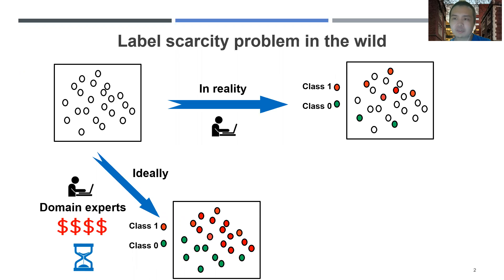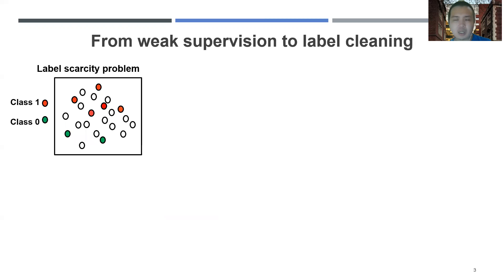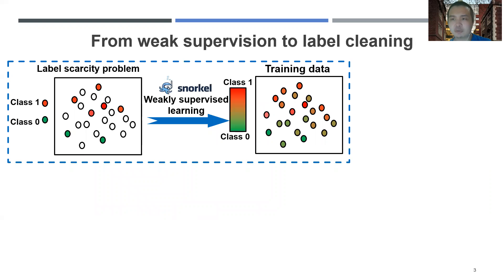Therefore, we need to figure out how we can learn a good machine learning model on training datasets in which only a small amount of training samples are labeled. To address such label sparsity problems, we can consider using weakly supervised learning methods. Specifically, we can use Snorkel, which can automatically produce probabilistic labels on those unlabeled training samples.